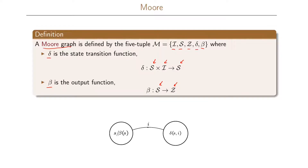Look at the difference here between the Mealy and the Moore graphs: the Mealy graph had the output function taking both a state and an input I, while here the output function only depends on the current state. Since the output function only depends on the current state, we write these graphs a little bit differently. We define state S, and when we leave this state S we output beta of S. The state transition function works the same as for the Mealy graph: when we have input I we go to the next state defined by delta taking the current state and input I.